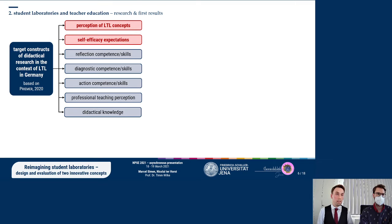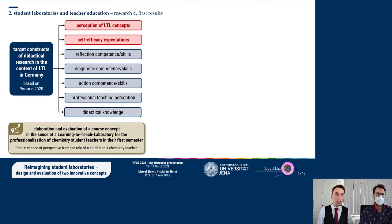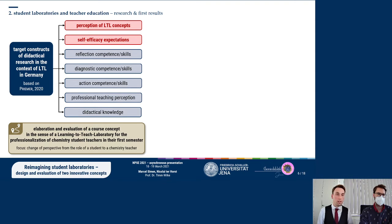The overall goal is the elaboration and evaluation of a course concept in the sense of a learning to teach laboratory for the professionalization of chemistry student teachers in their first semester. The related scientific research focuses on four questions that can be categorized into three areas.